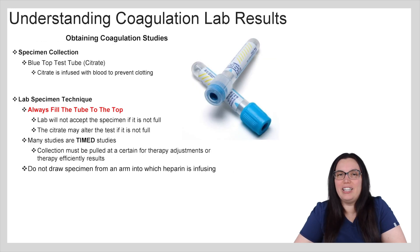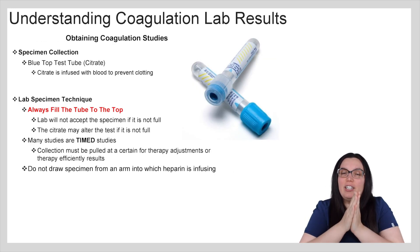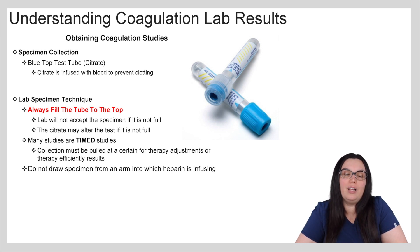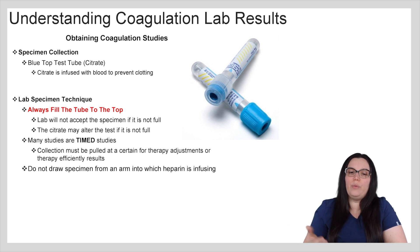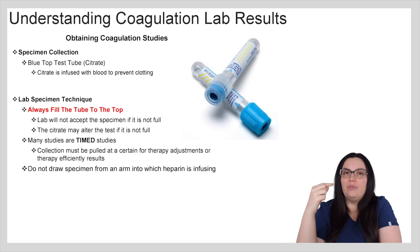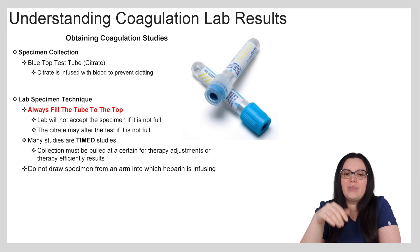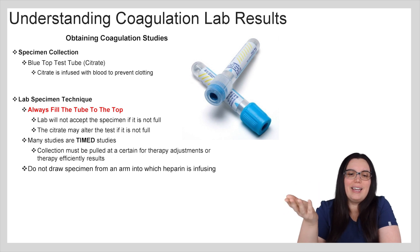When obtaining coagulation studies, specimen collection can truly be a challenge. The specific tube to use is the blue top tube, because it contains citrate, which is infused with blood to help prevent clotting. An important technique: you always have to fill the tube all the way to the top. If you send a tube that's only halfway full, the lab will not accept it, because the citrate may alter the test if it's not full.